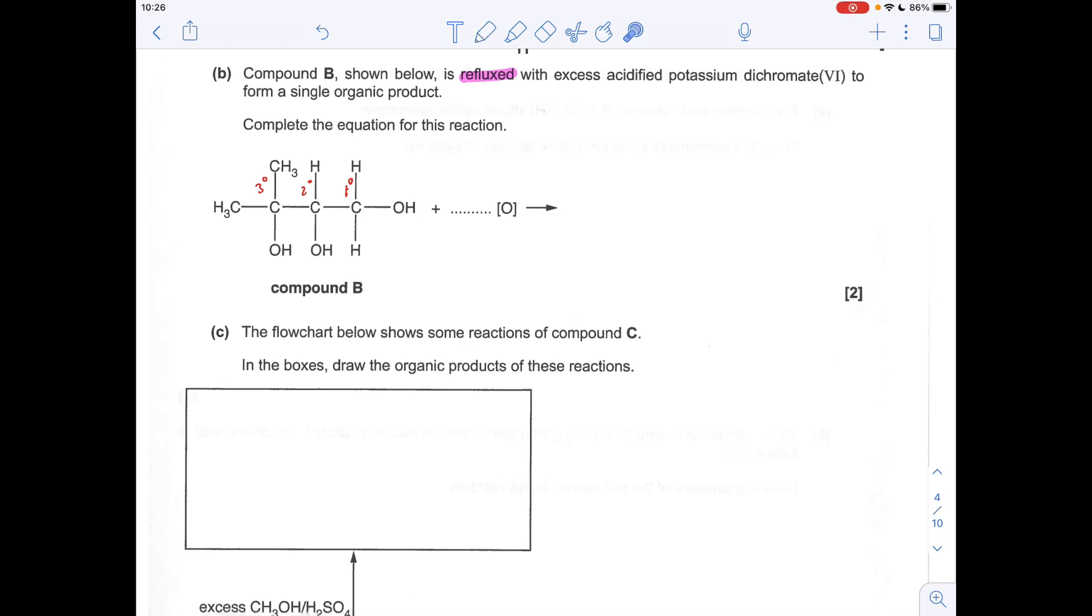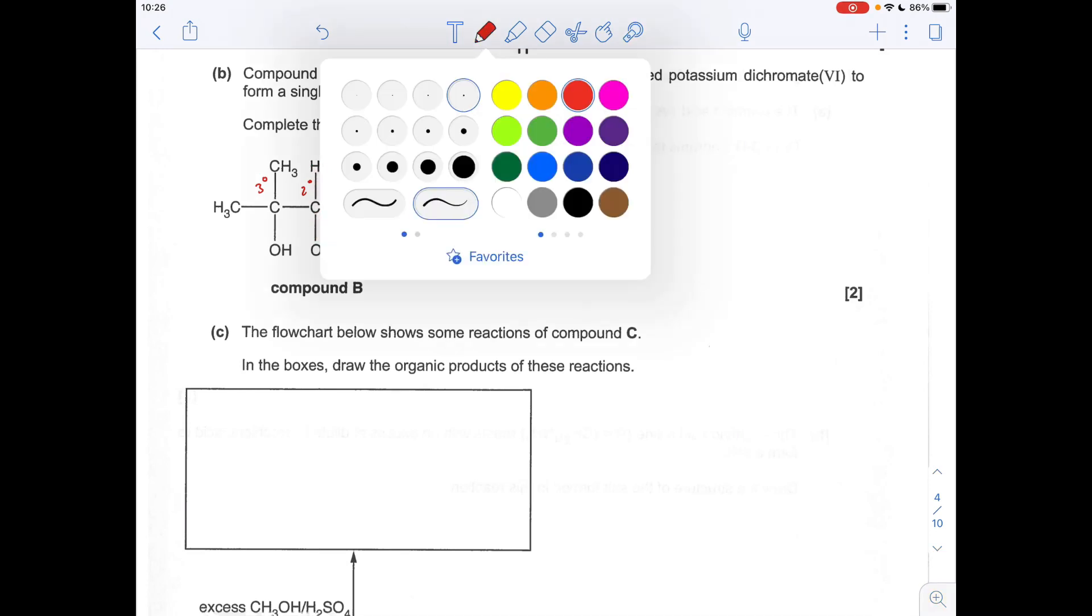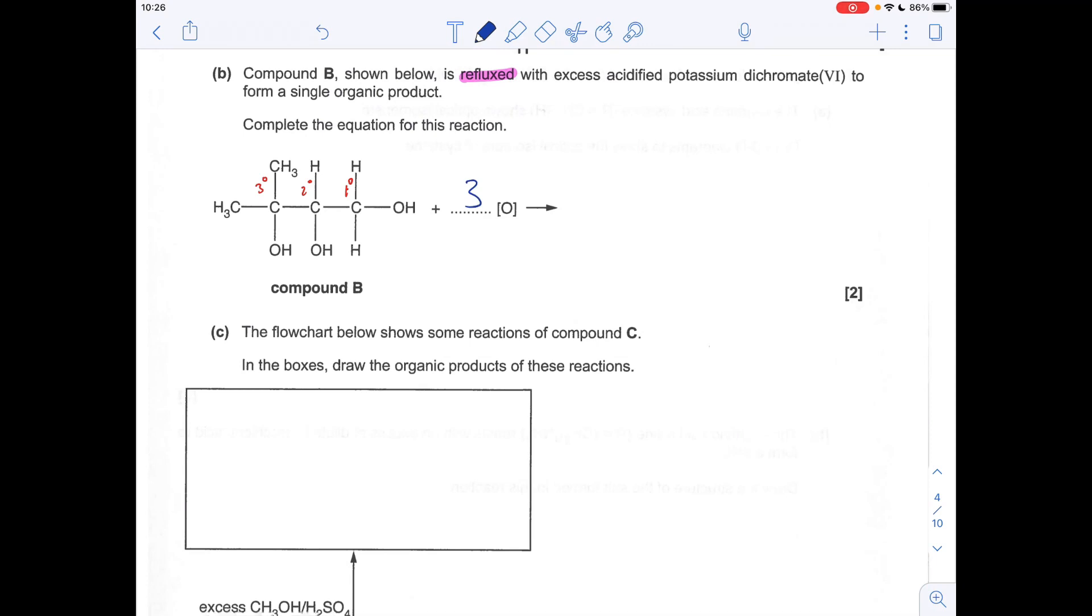So in terms of the number of oxidations that are taking place, this has been oxidized twice, firstly to the aldehyde, then to the carboxylic acid. And this has only been oxidized once. So the total number of moles of oxidizing agent is going to be three.